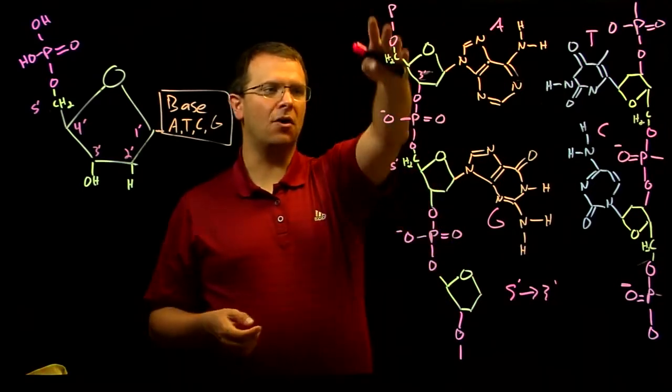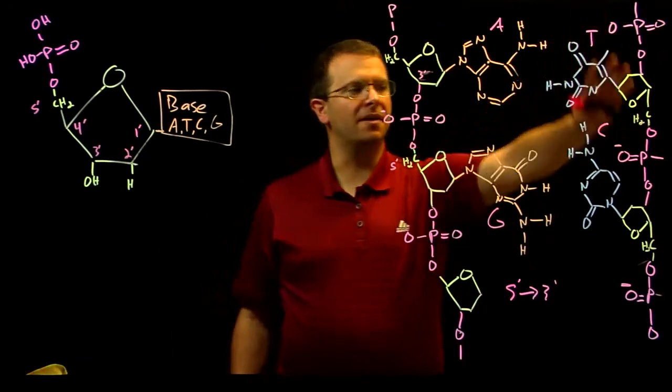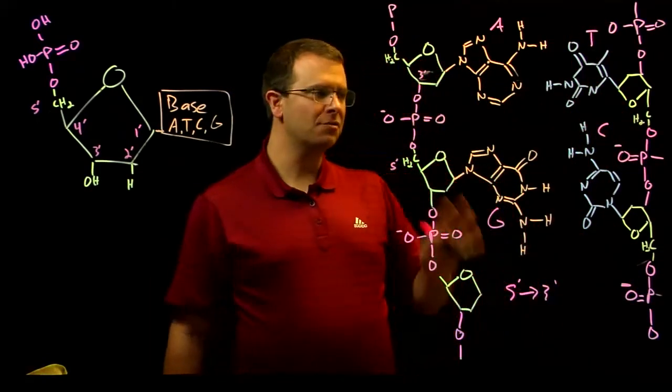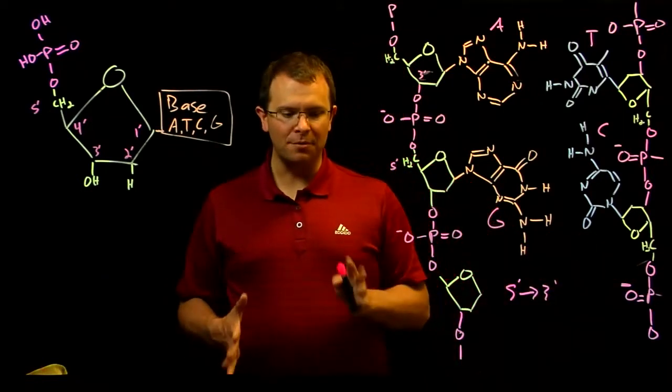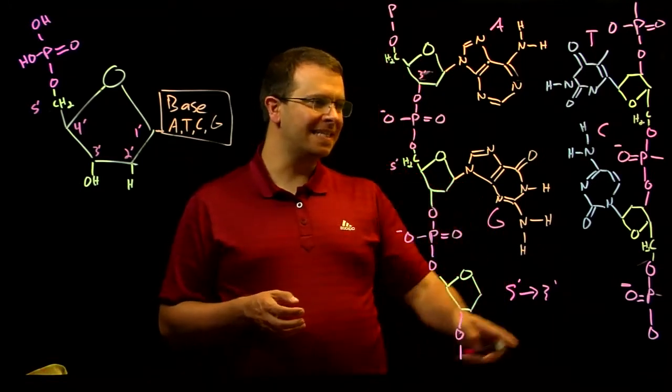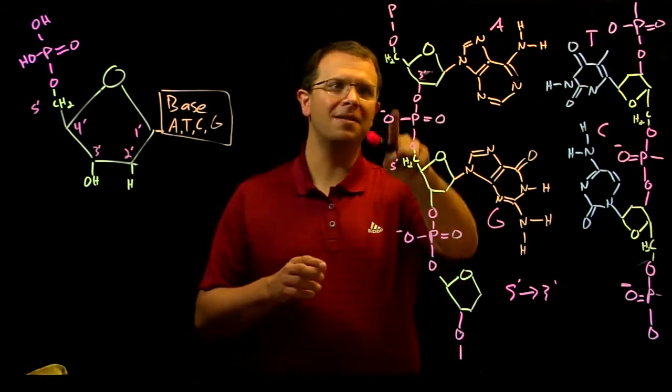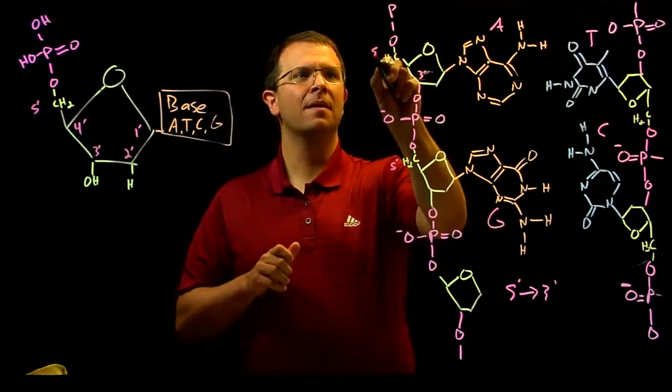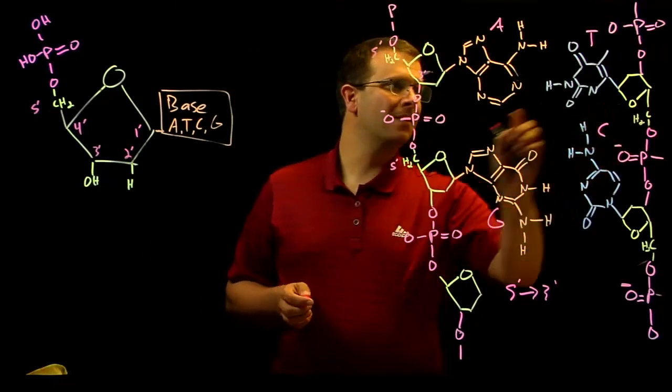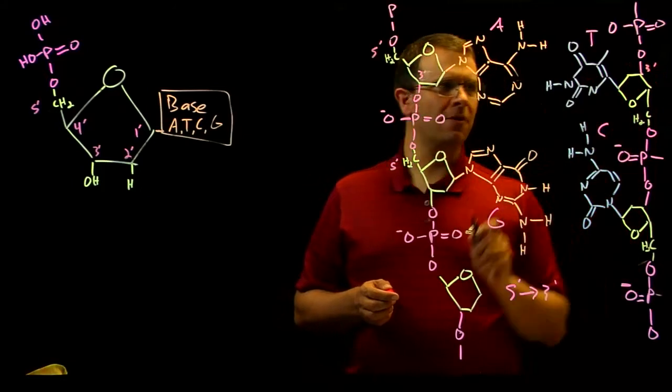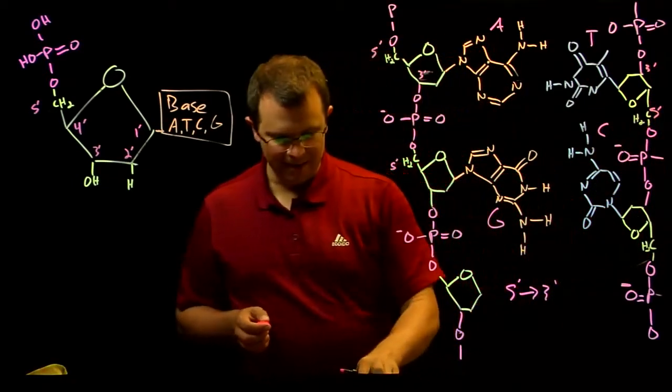Note that I've drawn one strand here with a pair of bases, and I've drawn another strand here with the complementary bases. When you consider this strand, there are a couple of important things to note. The first is that it is upside down compared to this one. Note that on this one, the 5' carbon is up and the 3' carbon is down. Whereas note on this one, the 3' carbon is at the top and the 5' carbon is at the bottom.